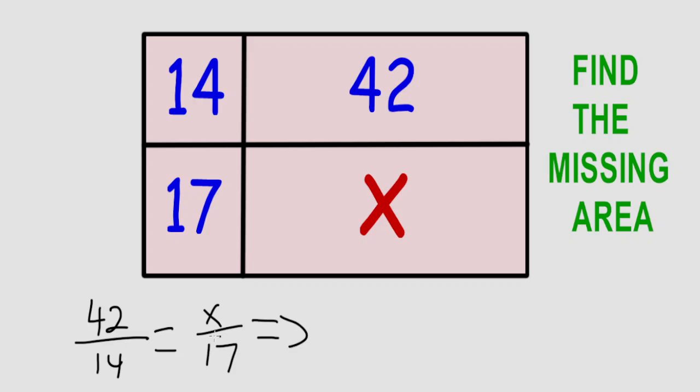So, by cross multiplication, the x is equal to 42 times 17 divided by 14.